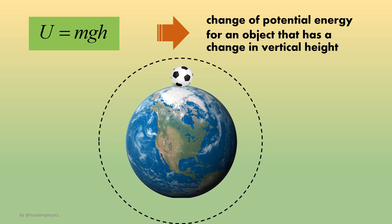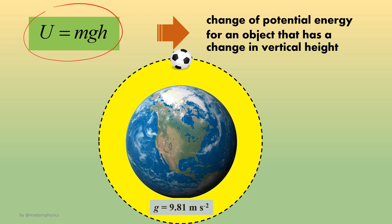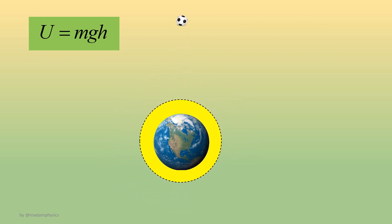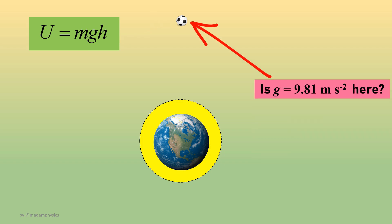U equals mgh can be used to calculate the change of potential energy for an object that has a change in vertical height. However, this formula is only valid for an object located near the surface of the Earth, because g is constant here at 9.81. What if the ball is brought far away from the surface of the Earth? Is U equals mgh still valid? If your answer is yes, are you really sure that g is also 9.81 at that position?